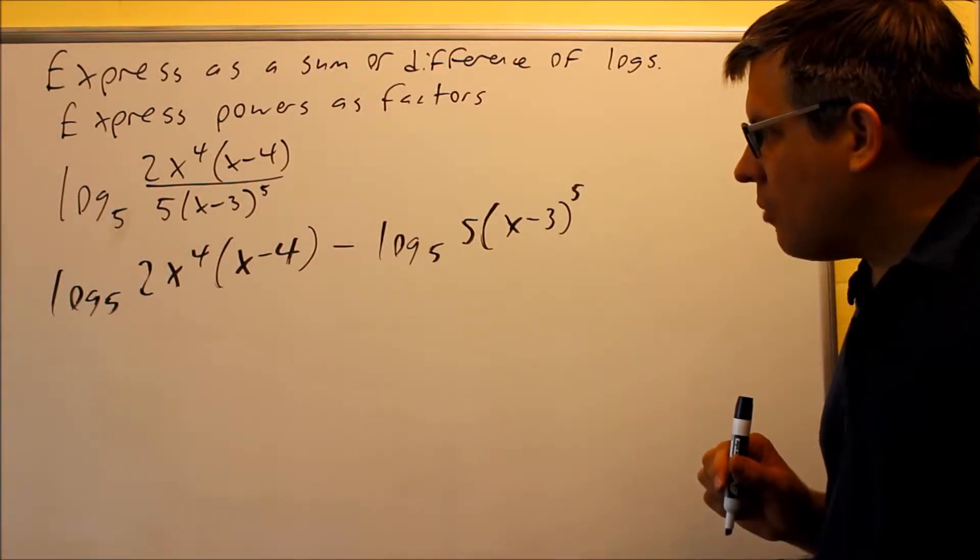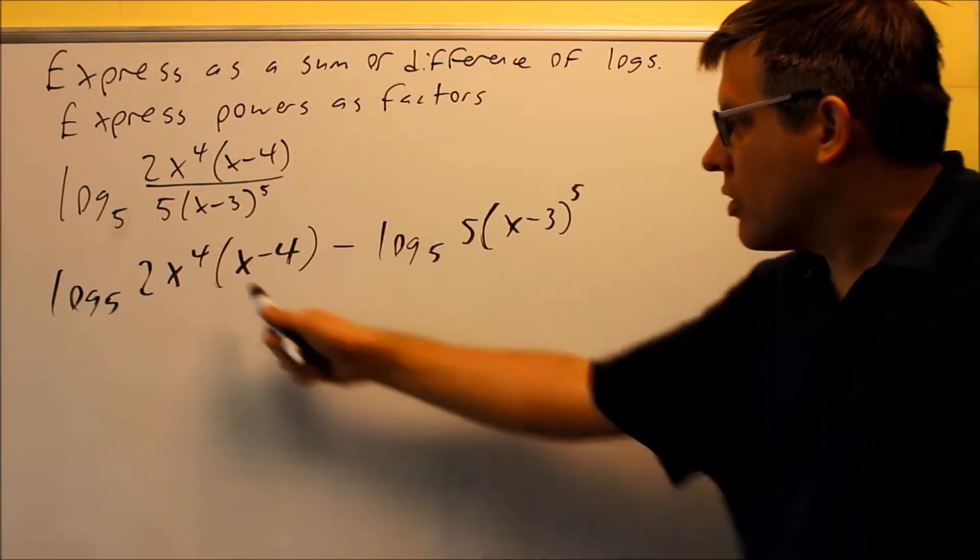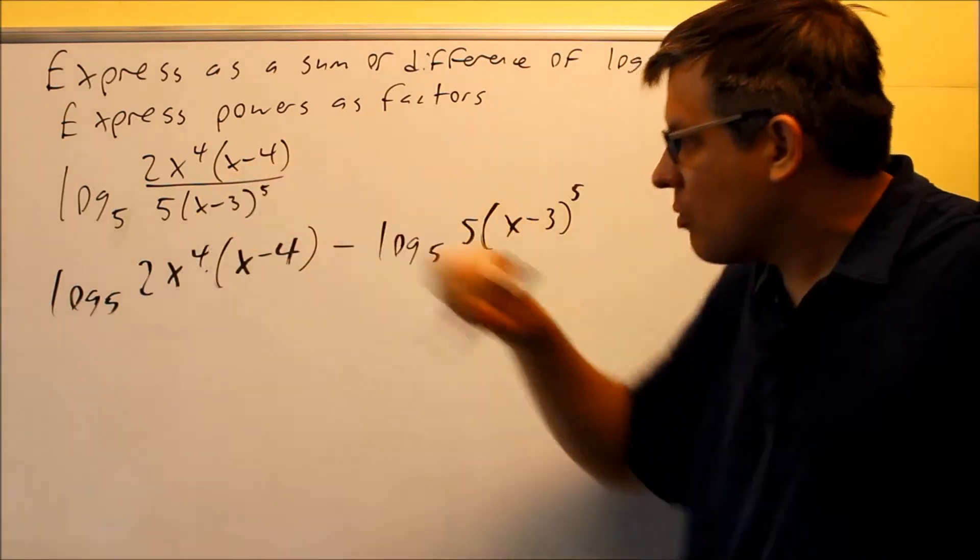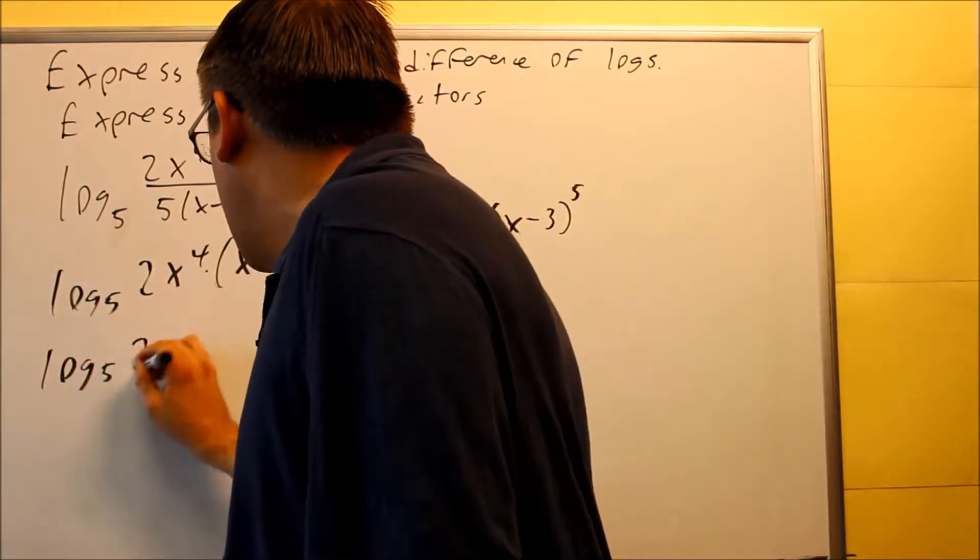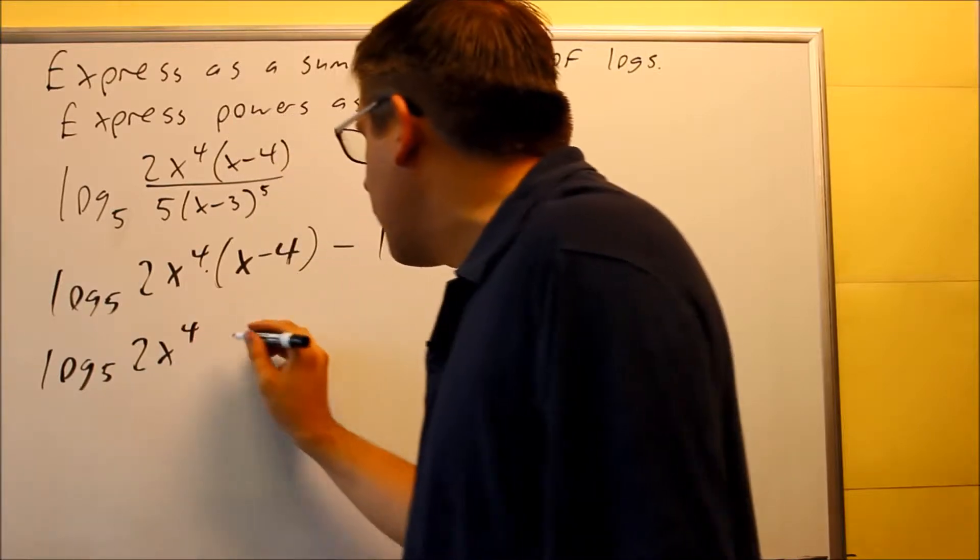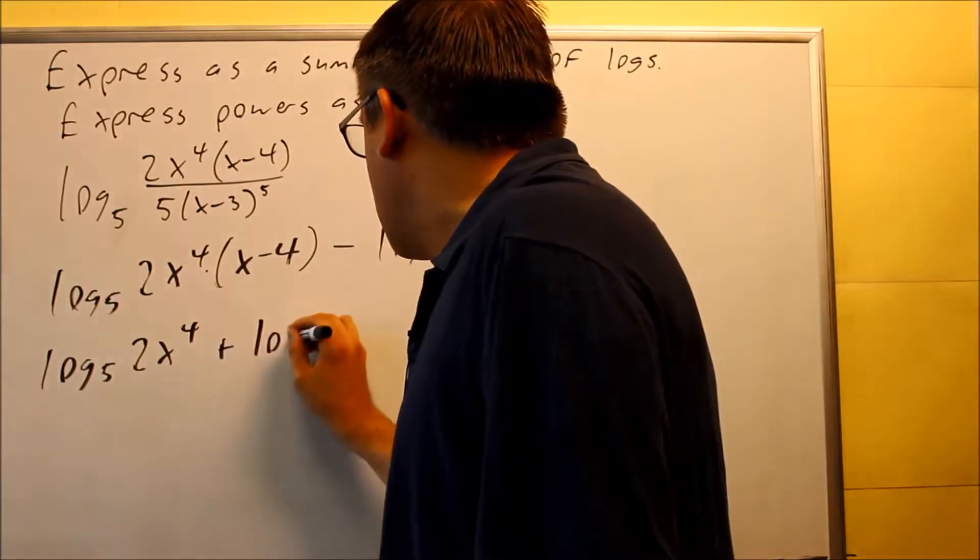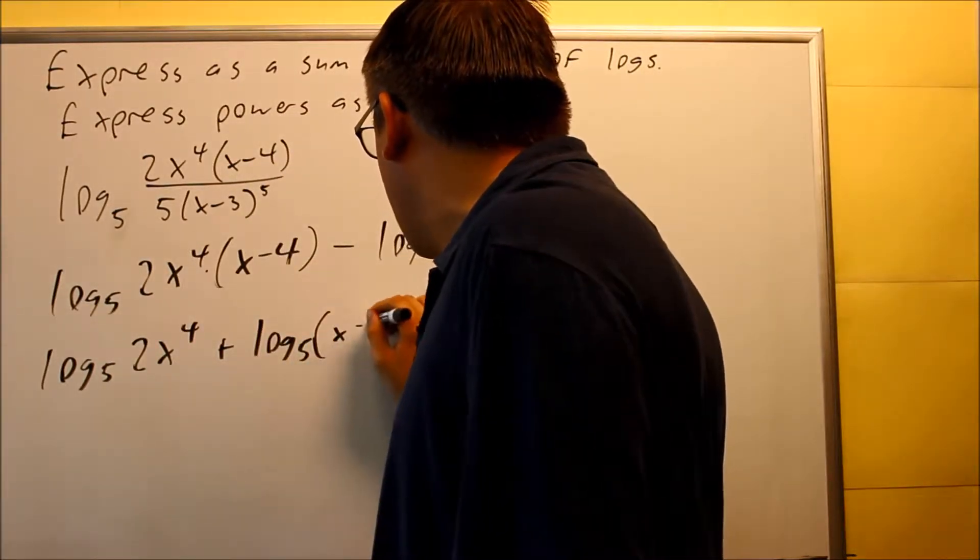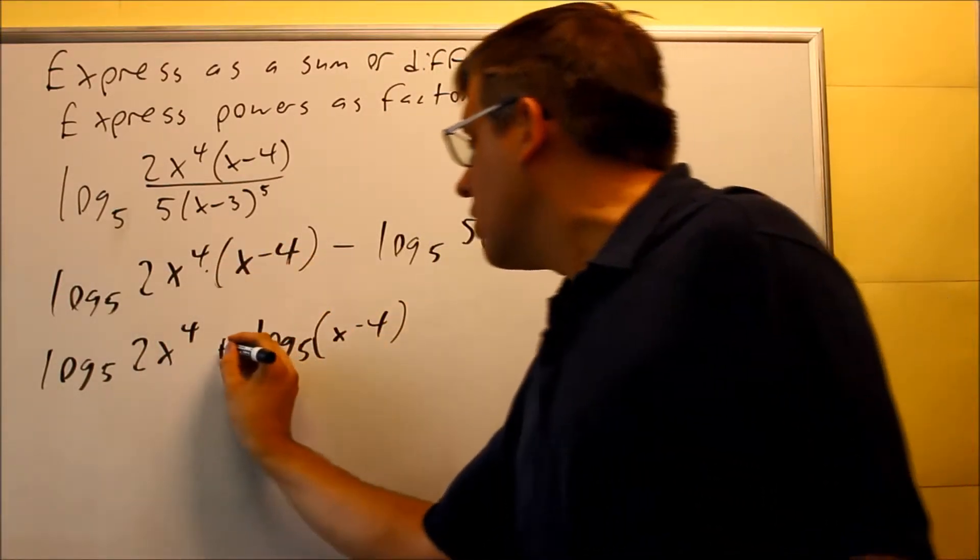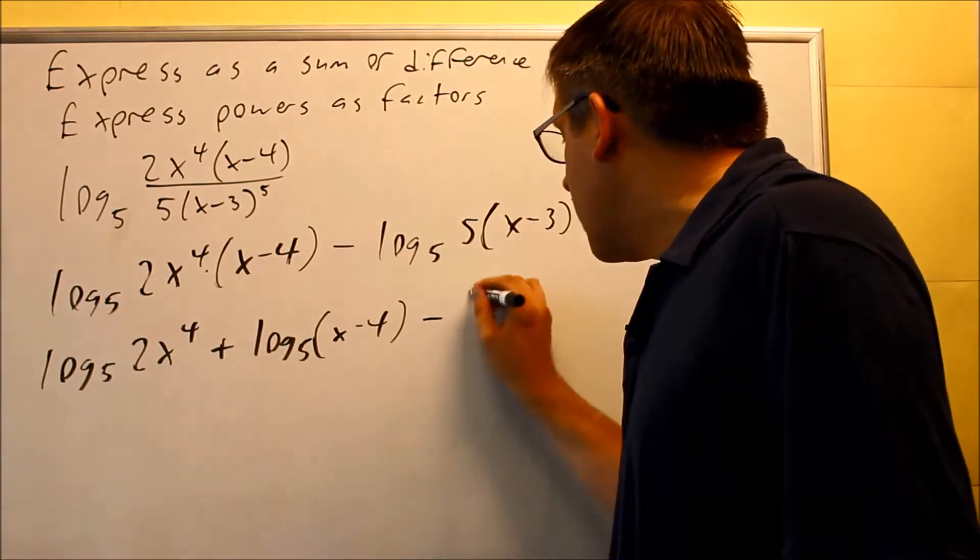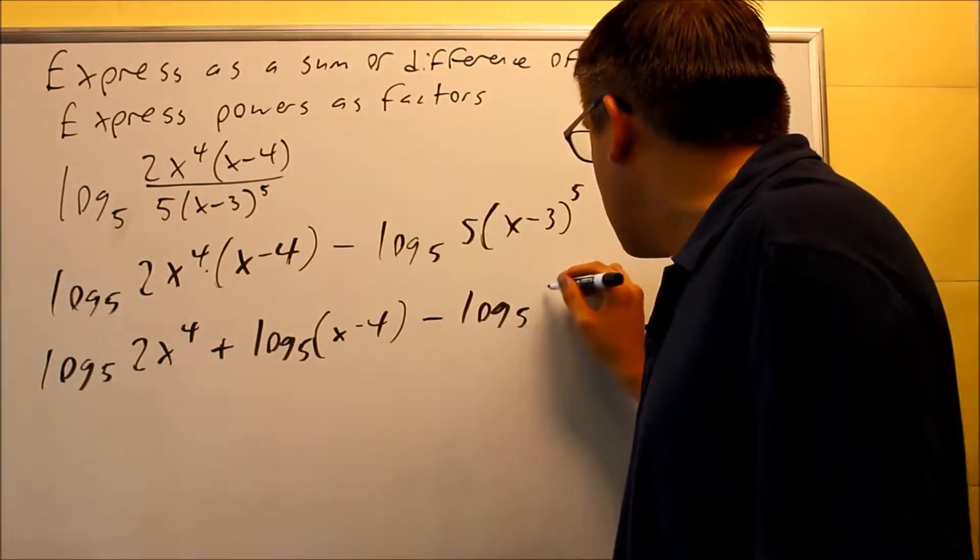So next, I can do some more work with this. This is a multiplication here, so I'm going to go ahead and separate that and turn that into addition. So log base 5 of 2x to the 4th plus log base 5 of (x minus 4). This is using rule number six. We have multiplication turns into addition. I'm going to leave this one as it is for right now.